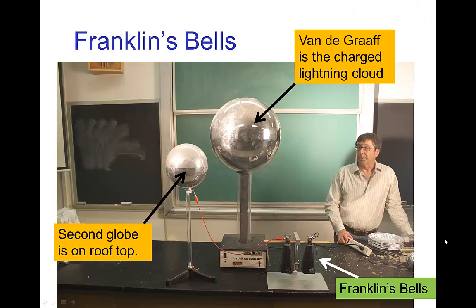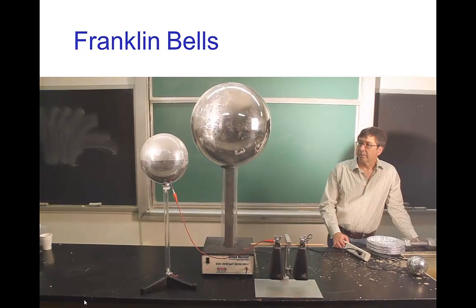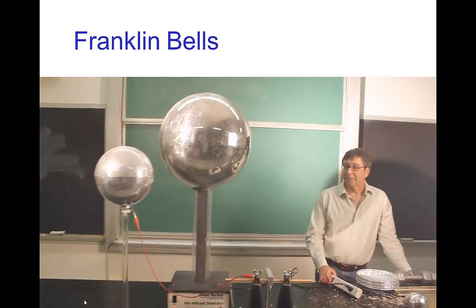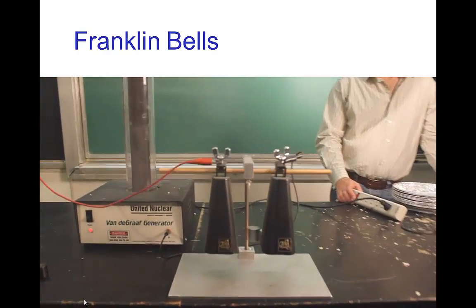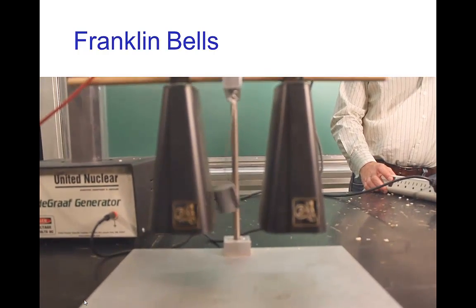Here we have a setup that mimics that: the Van de Graaff generator plays the role of the storm. This second globe is a metal ball representing what would be positioned on the roof of the house, and we have it connected by a wire to the Franklin bell. Let's see this in action. I can feel my hair standing up a little bit.